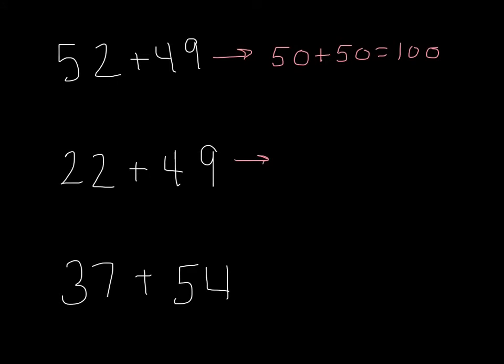The next one, we know 22 rounds to 20, 49 again rounds to 50, so our close estimate is 70. And the final one, 37 would round to 40 and 54 would round to 50, so our estimate in this case would be 90.